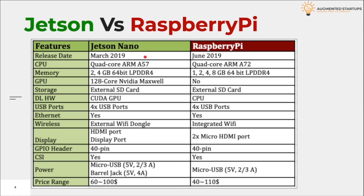The Jetson Nano comes with 2 and 4GB of memory, whereas the Raspberry Pi comes in flavors of 1, 2, 4, and 8GB of RAM. Both contain the same type of RAM using low power DDR4 with the same transfer rates. The Raspberry Pi does not possess a GPU, which means it has no support for CUDA. On the other hand, the Jetson comes with CUDA support for the GPU, which makes AI development easier and faster.